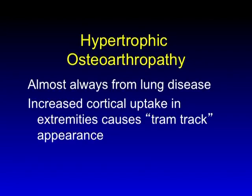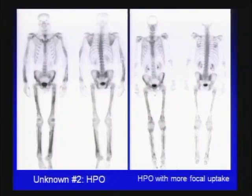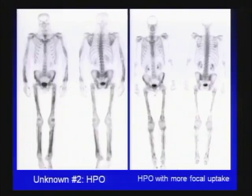Hypertrophic osteoarthropathy is almost always from pulmonary disease, and today it's almost always from lung cancer. It presents as diffuse uptake with a kind of tram-track appearance. This is the second unknown — uptake along the extremities, in this case the lower extremities as well as the upper extremities. Very diffuse uptake along the extent of all the extremities is classic for osteoarthropathy. This patient's diagnosis is lung cancer, the most common cause. The pattern shows a very smooth zone of involvement. Another patient, also with lung cancer, shows a slightly lumpier but still cortical peripheral surface lesion appearance — classic hypertrophic osteoarthropathy.